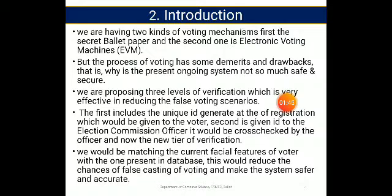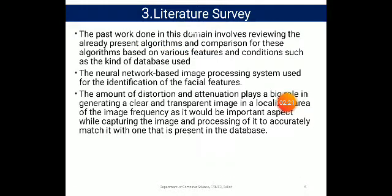The first step generates an ID at registration that will be given to the voter. The second step is that the election commissioner's office will cross-check the given ID for the voter. Next, the new layer of verification is that we will match the current facial features of the voter with the one present in the database. This will reduce false casting of votes and make the system safer and more accurate.